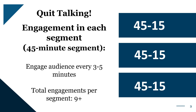And finally, quit talking. Now, that sounds like a dumb thing to say when you're online and feel you've got to talk a lot — but you don't. You can have them doing things. In another segment, I show you all the different ways you can engage your audience. Engagement in each segment: if you're going to do three hours, you want 45-minute segments with 15 minutes off, and engage your audience every three to five minutes. Your total engagements per segment should be nine or more.